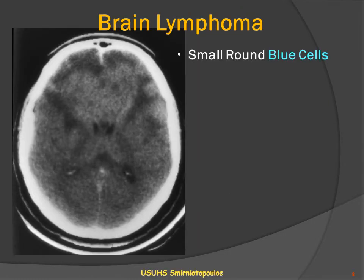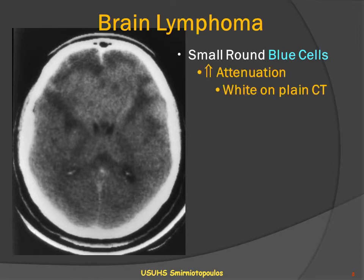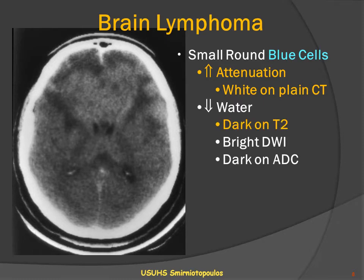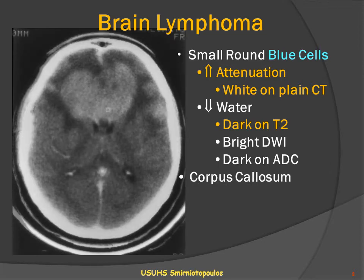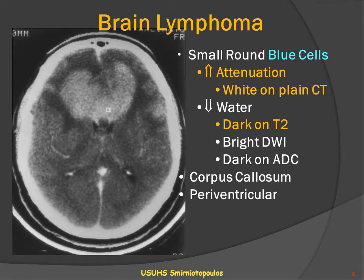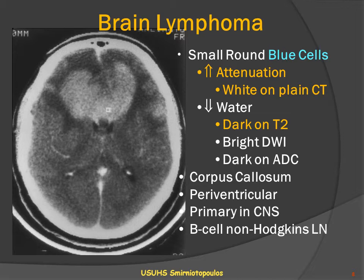Primary brain lymphoma typically is a hyperattenuating lesion on the non-contrast CT scan because this is a classic small, round blue cell tumor. Because the cells have a lot of DNA and are very closely packed, they can attenuate the X-ray beam. Because they have decreased water, they may be dark on T2-weighted MR. They can have restricted diffusion and be bright on DWI and dark on the apparent diffusion coefficient, or ADC, map images. The lesions lack a blood-brain barrier, so they almost always show abnormal enhancement in the corpus callosum. Solid non-hematopoietic lymphomas are almost always B-cell lymphomas, and circulating or hematopoietic lymphomas are usually T-cell lymphomas.